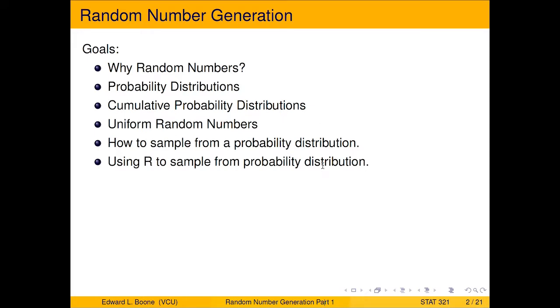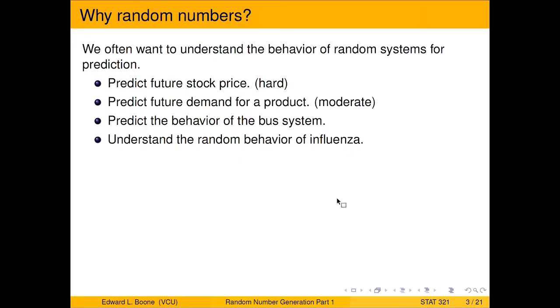Okay, so let's get going here. Why random numbers? Well, often we want to understand the behavior of things that are random that we want to predict. And sometimes they're easy to do, and sometimes they're hard to do. Often it's trying to understand a behavior, not trying to model something directly as in the past, but something that will happen in the future.